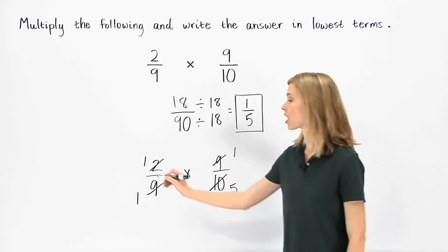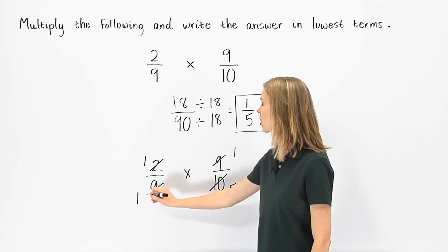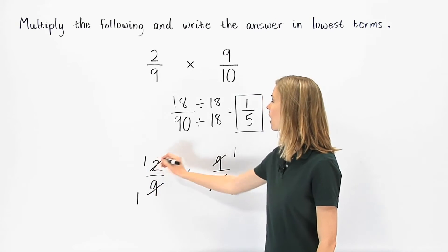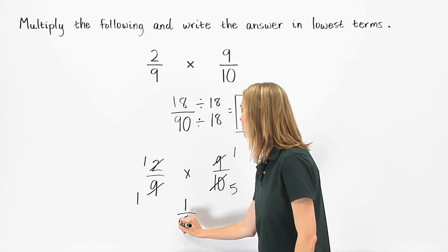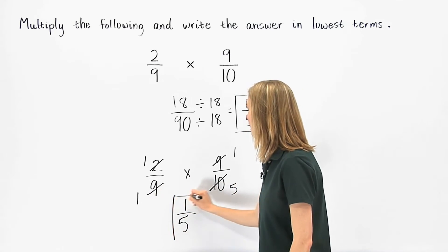Now, we simply multiply across the numerators and across the denominators. 1 times 1 is 1, and 1 times 5 is 5. So we have 1 fifth.